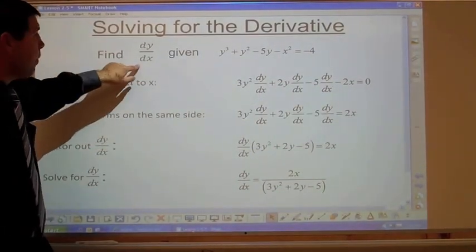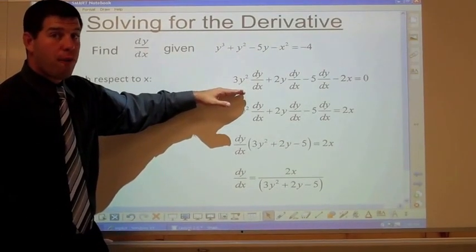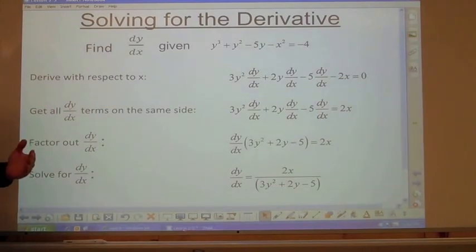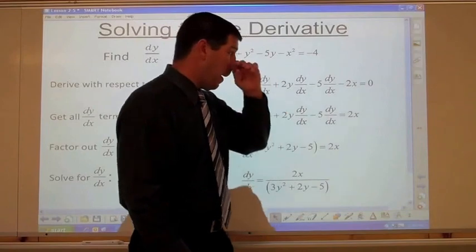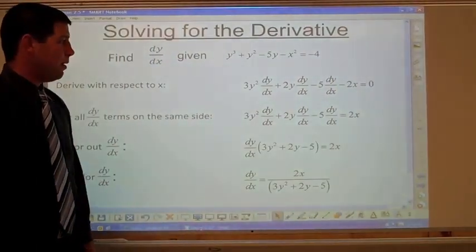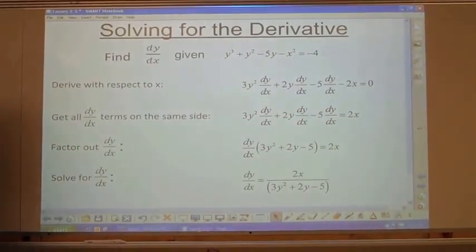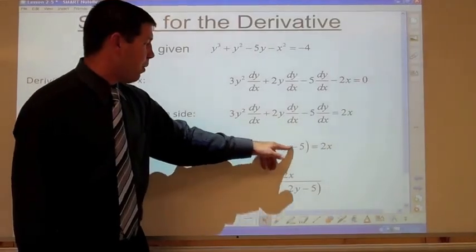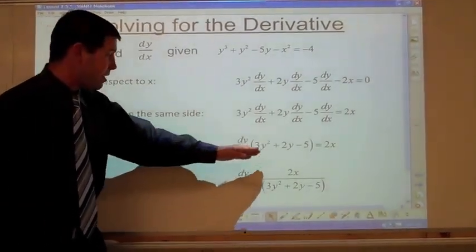So I have 3y squared dy/dx plus 2y dy/dx minus 5 dy/dx minus 2x equals 0. Now I want to solve for dy/dx: get all the dy/dx terms on one side, bring negative 2x to the other side as positive 2x. Factor out dy/dx from the three terms: (3y squared plus 2y minus 5) times dy/dx equals 2x. Divide both sides by that expression.